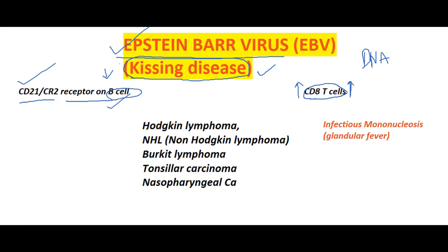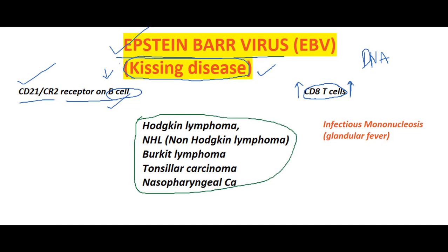Coming to the spectrum of carcinomas that Epstein-Barr virus causes — all these carcinomas are caused by EBV: Hodgkin lymphoma, Non-Hodgkin lymphoma (NHL), Burkitt lymphoma, tonsillar carcinoma, and nasopharyngeal carcinoma.